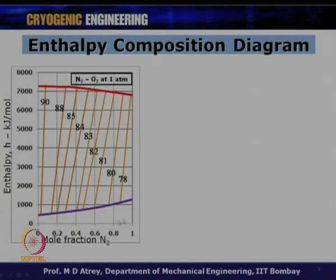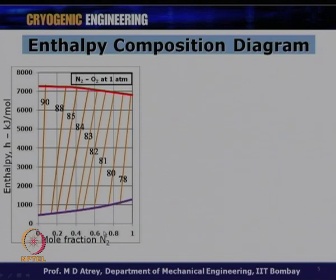The enthalpy composition diagram has enthalpy in kJ/mol on the y-axis. This is given for a nitrogen-oxygen mixture at one atmosphere. All such diagrams are given for a particular component mixture at a particular pressure. On the x-axis is the mole fraction of the low boiling component, which is nitrogen here — 0% nitrogen at one end means 100% oxygen, while 100% nitrogen at the other end means 0% oxygen.